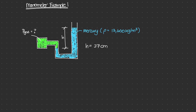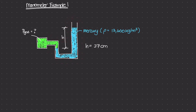In this example we have gas contained inside of this chamber, and to this chamber we have this manometer device that's filled with some sort of a liquid. In this case it's mercury, and mercury has a mass density of 13,600 kilograms per meter cubed. The difference in height between the level of mercury on the right side and on the left side is h, and that height is 37 centimeters.